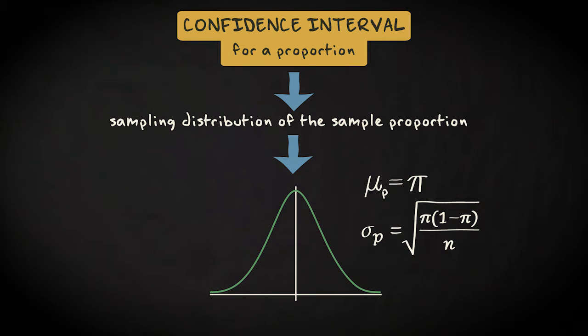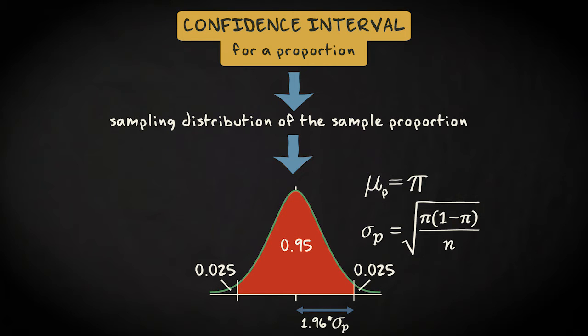We also know that the probability of finding a sample proportion less than about 2 standard deviations of the mean, which is the population proportion, is 0.95. More precisely, if we look up the z-score which corresponds to this probability, we'll find a value of 1.96. This means that we have a 95% chance that our sample proportion will fall within 1.96 standard deviations of our population proportion. This is what we call the margin of error.